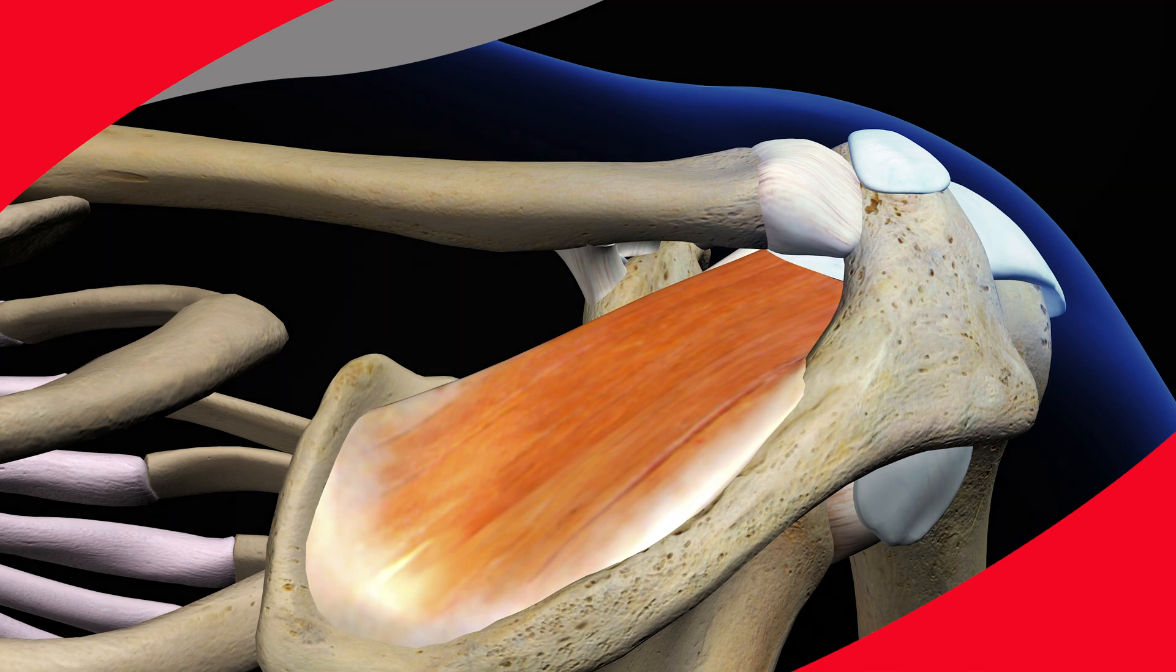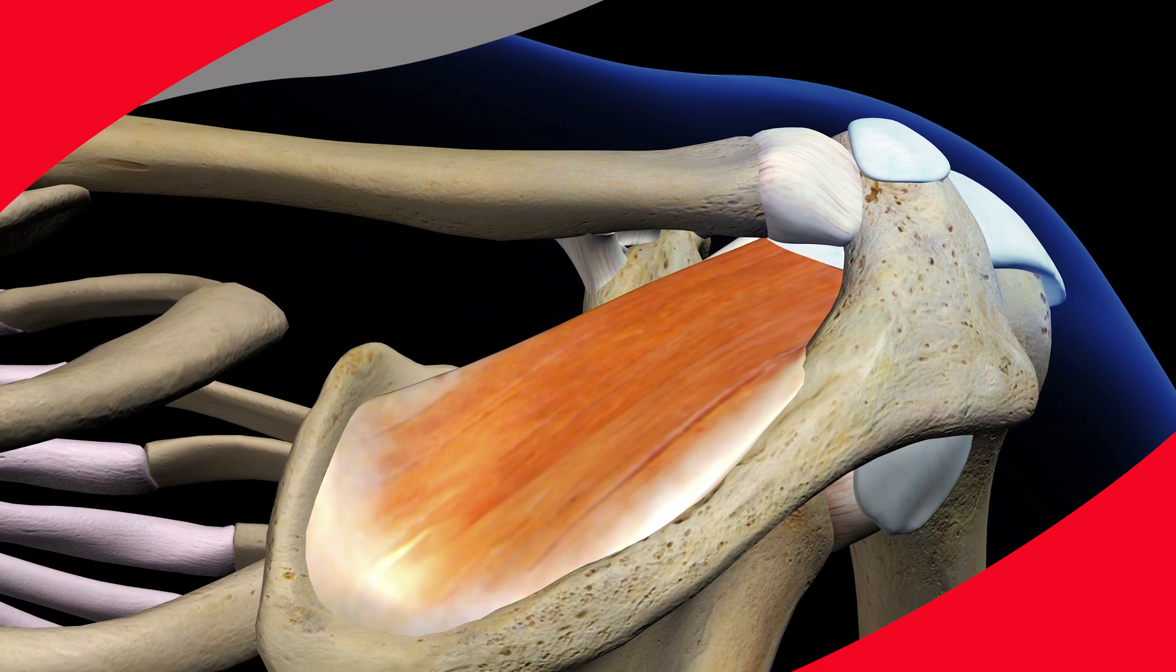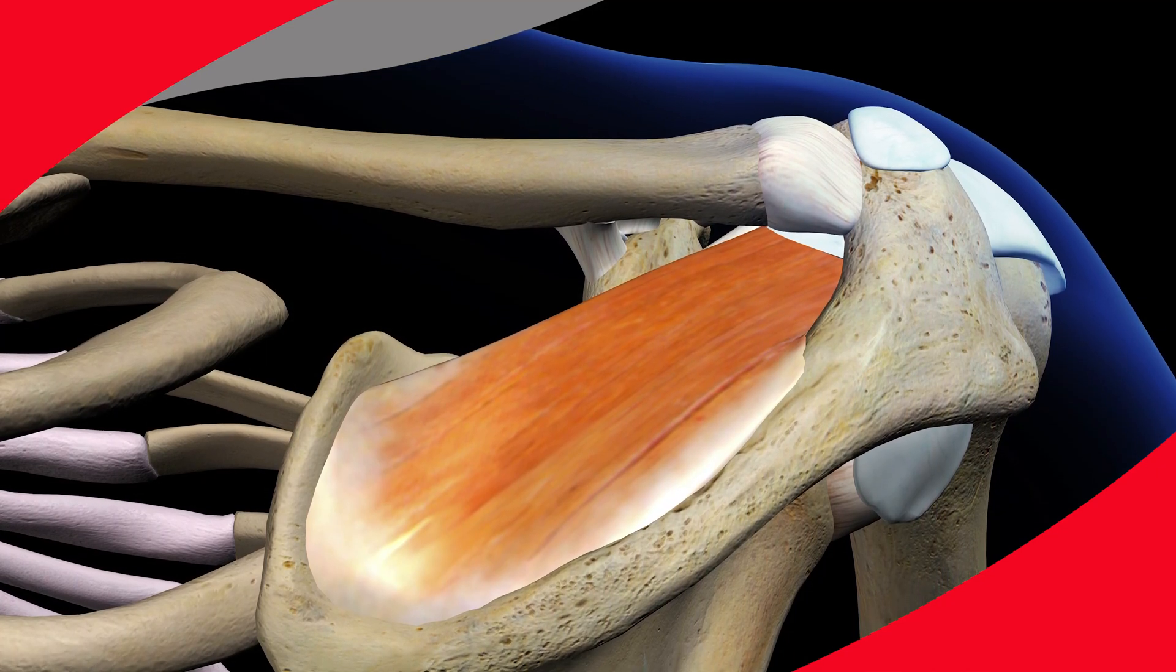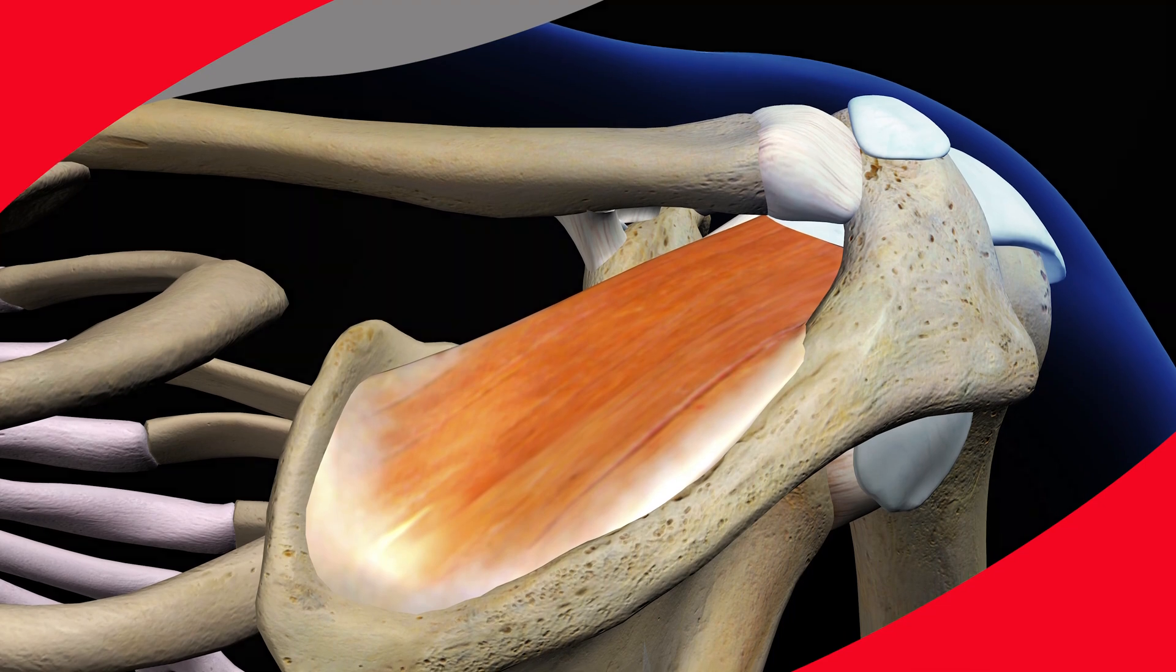So in the shoulder, there are three basic places where you can inject. Now there are other places, but this is kind of the general idea, the general thought process.